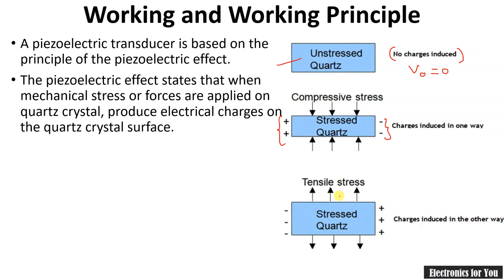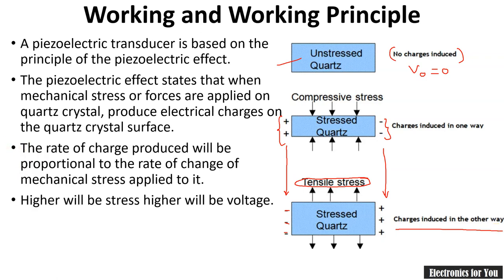Now, if exactly the opposite force is applied — that is, if we apply tensile strain — then the direction of charge will change. The side that had positive charge under compressive stress will now become negative, and the negative side will become positive. It means the charge is induced in the opposite direction. The rate of charge produced is proportional to the rate of change of mechanical stress applied to it. Higher stress will produce higher voltage, meaning the output voltage is directly proportional to the pressure applied.